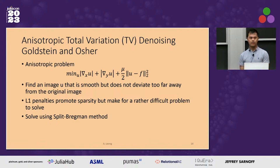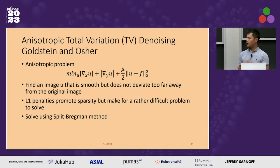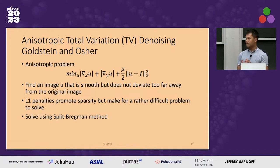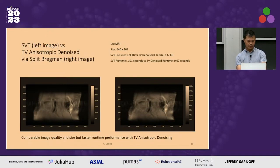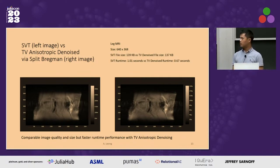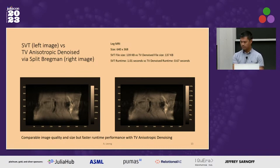The method we use to solve this is the Split Bregman method, which probably falls into the class of augmented Lagrangian methods. Whenever you've got L1 terms and L2 terms stuck together like that, which makes it hard to solve, there's a whole class of convex optimization algorithms called operator splitting methods. These basically solve each of those in tandem — solve the L1 first using some shrinkage method and then move to the L2 term, solving that and going back and forth. That's what the image looks like: the original on the left, the denoised image on the right, and it only took one second to denoise that image on a single slice.